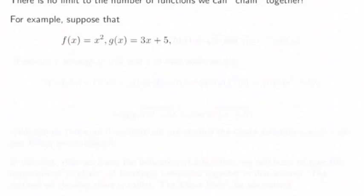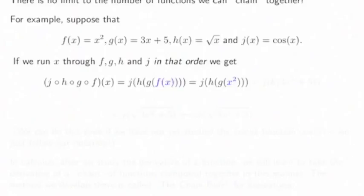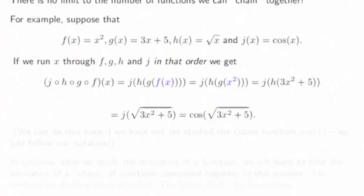There is no limit to the number of functions we can chain together. Suppose f of x is the square function, g of x is the linear function 3x plus 5, h of x is the square root function, and j of x is the cosine function. Running x through f, g, h, and j in that order, we get j composed with h composed with g composed with f of x, which simplifies step by step to the cosine of the square root of 3x squared plus 5.